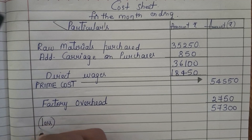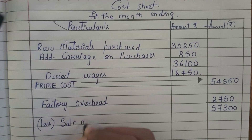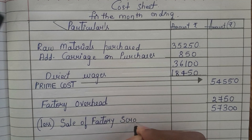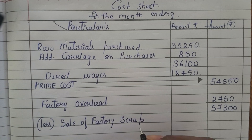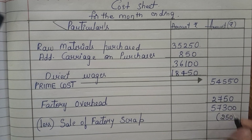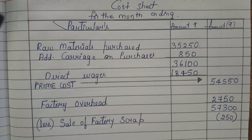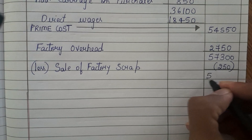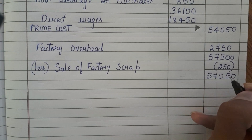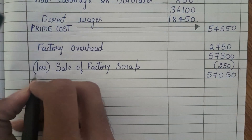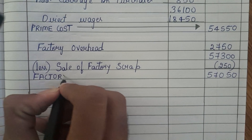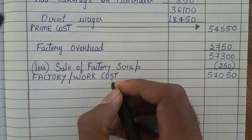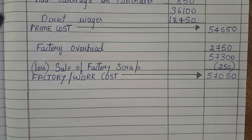Now, sale of factory scrap is also given. Factory scrap refers to leftover waste material from the factory that is sold. We need to subtract this from the factory cost. The sale of factory scrap is 250. Subtracting 250 from 57,300, we get 57,050. This is our factory cost, also known as work cost — 57,050 rupees.